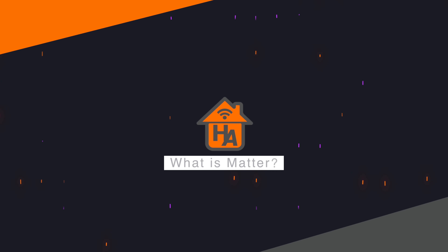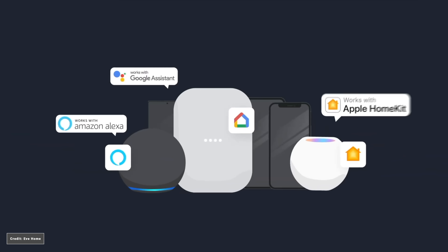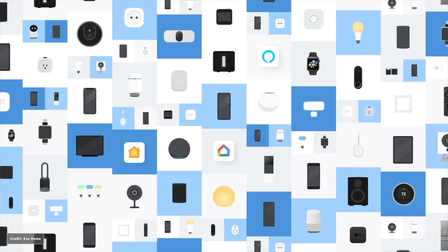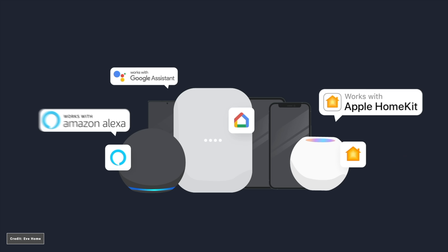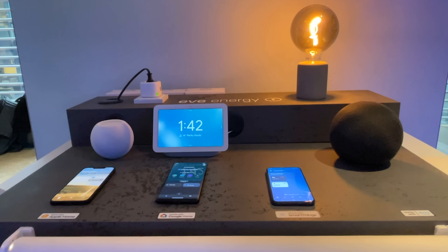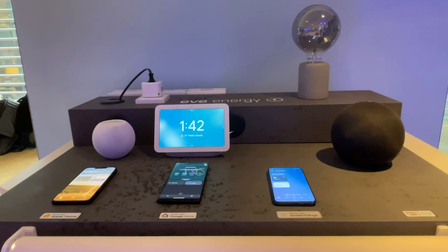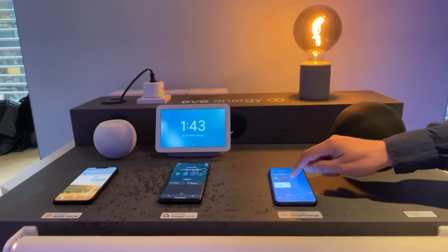So very briefly, what is Matter? Matter is a universal standard designed to simplify buying, connecting, and using smart home devices for the end user. The Matter standard uses a common language that's local to your home and doesn't rely on the cloud, meaning more than one smart ecosystem or voice assistant can control your devices. This means you are not tied to one smart home ecosystem with Matter-certified devices — so you could start out with Google Home and move over to Apple HomeKit, or run both Amazon Alexa and HomeKit at the same time.